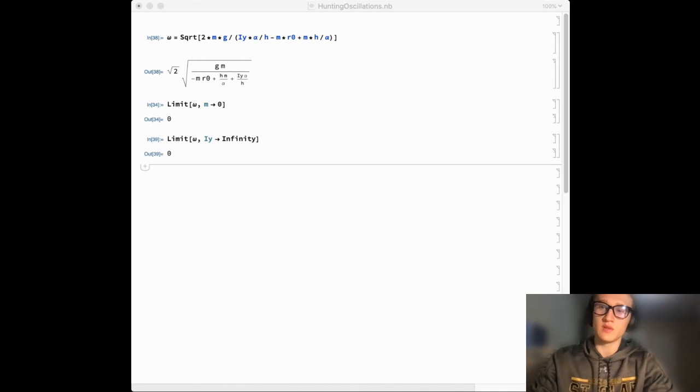Finally, let's look at a couple limiting cases to check if our solution makes sense. In Mathematica, I have used the limit function on our frequency equation to explore the limiting cases. As the mass of the train approaches zero, the frequency also approaches zero. This makes sense, as the decreased mass would lead to a decreased gravitational force to pull the wheels back toward the center of mass.